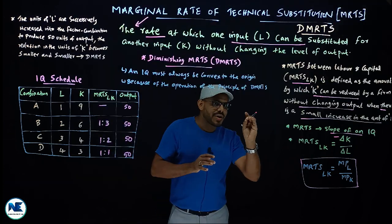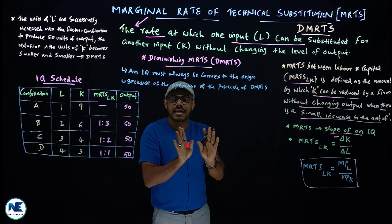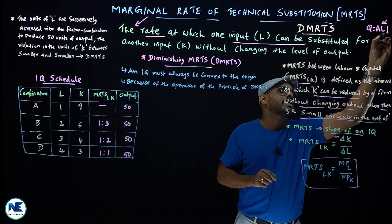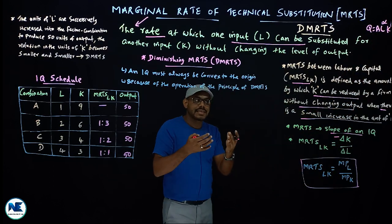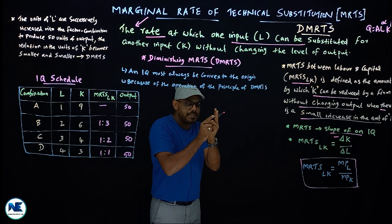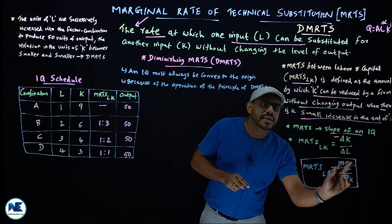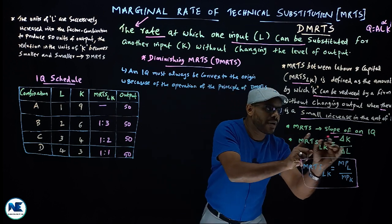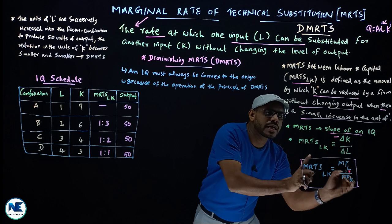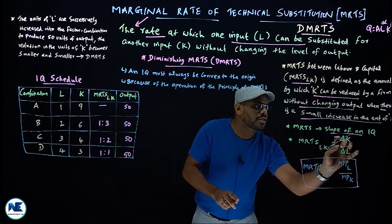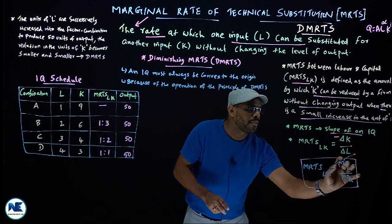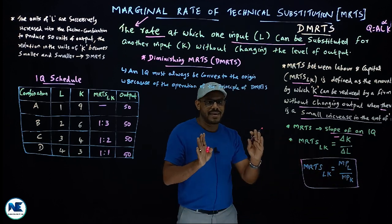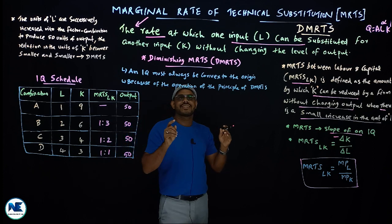This has already been discussed in the Cobb-Douglas production function. The Cobb-Douglas production function is Q = A × L^α × K^β. MRTS between labor and capital equals ΔK divided by ΔL, which equals marginal product of labor divided by marginal product of capital — the ratio of MPL to MPK.